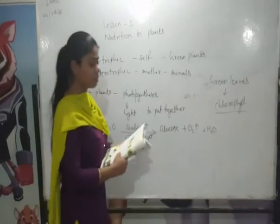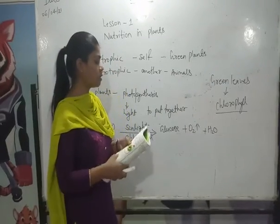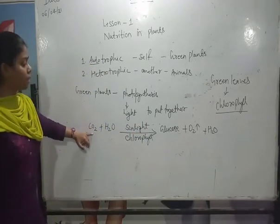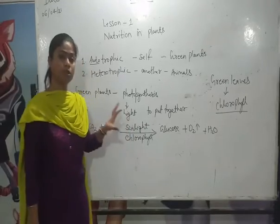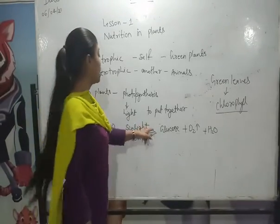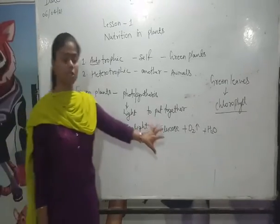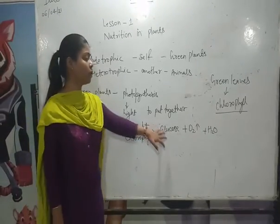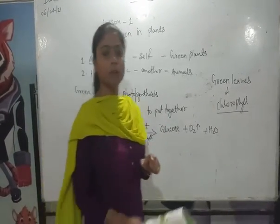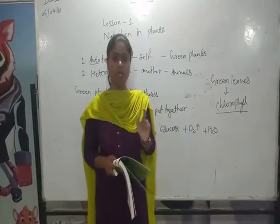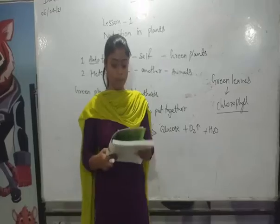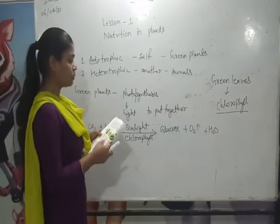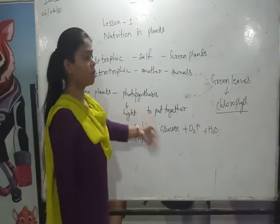The second important thing is sunlight, which we get from the sun, and it is very necessary to carry out photosynthesis. Without sunlight, this process will not be carried out. Carbon dioxide, H2O, sunlight, and chlorophyll — all four things are very important. If any one of them is missing, this process will not happen. Plants only make their food in the presence of sunlight. Water and minerals are absorbed from the soil through the roots and transported through pipe-like vessels up to the leaves.